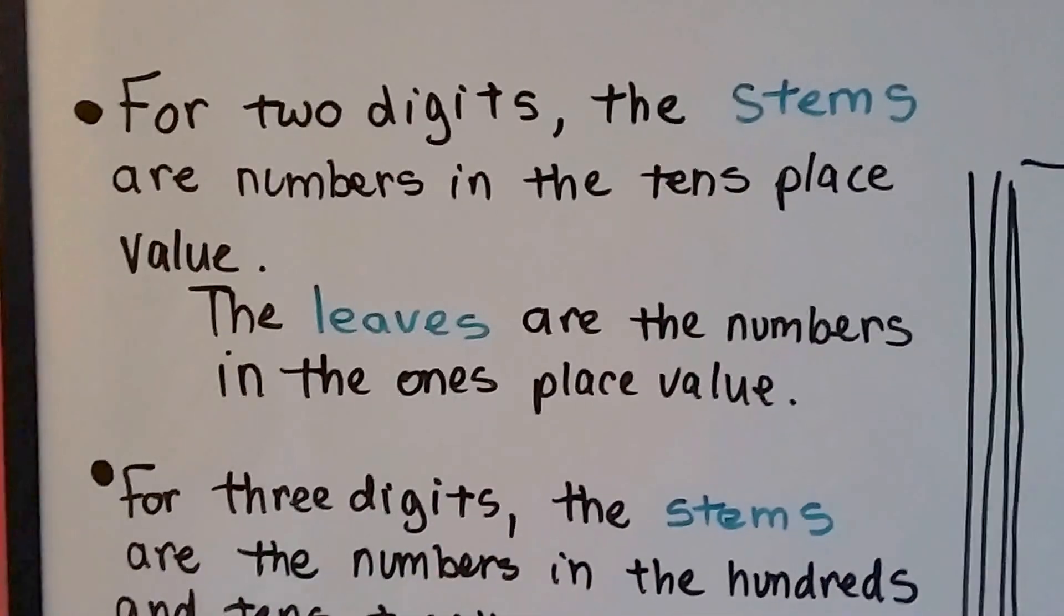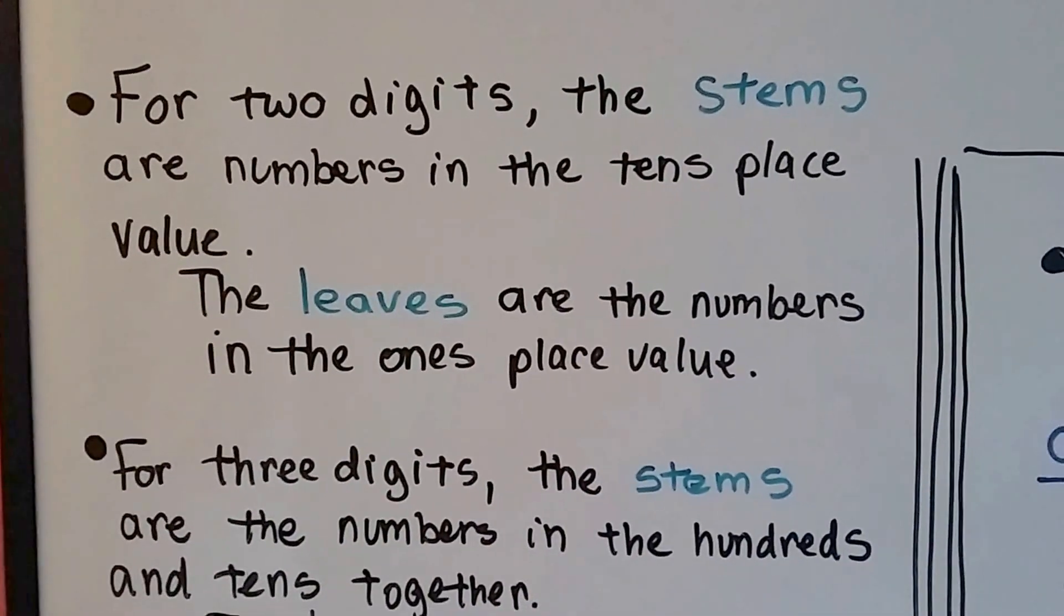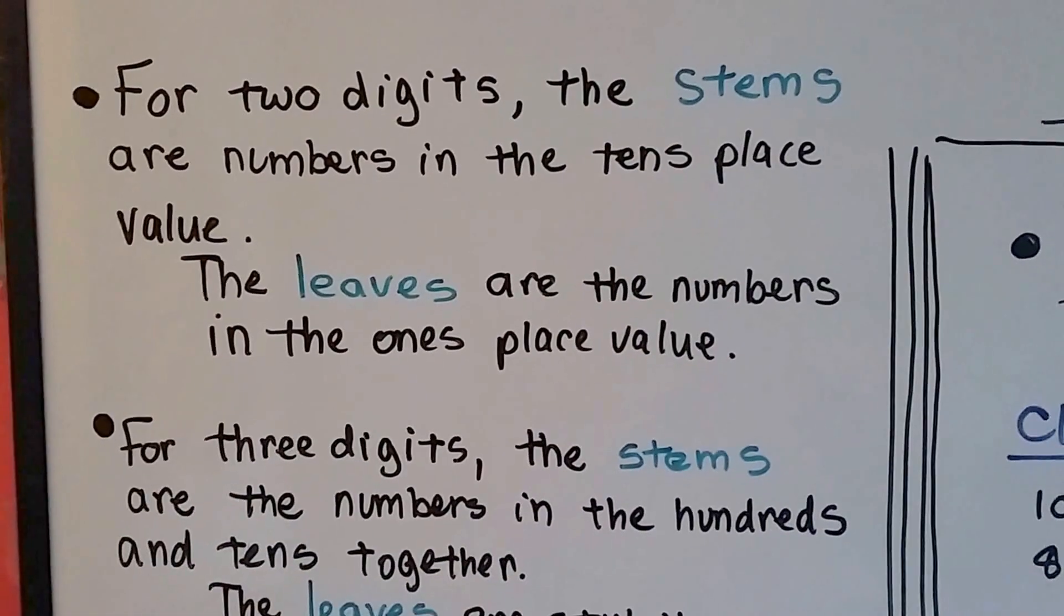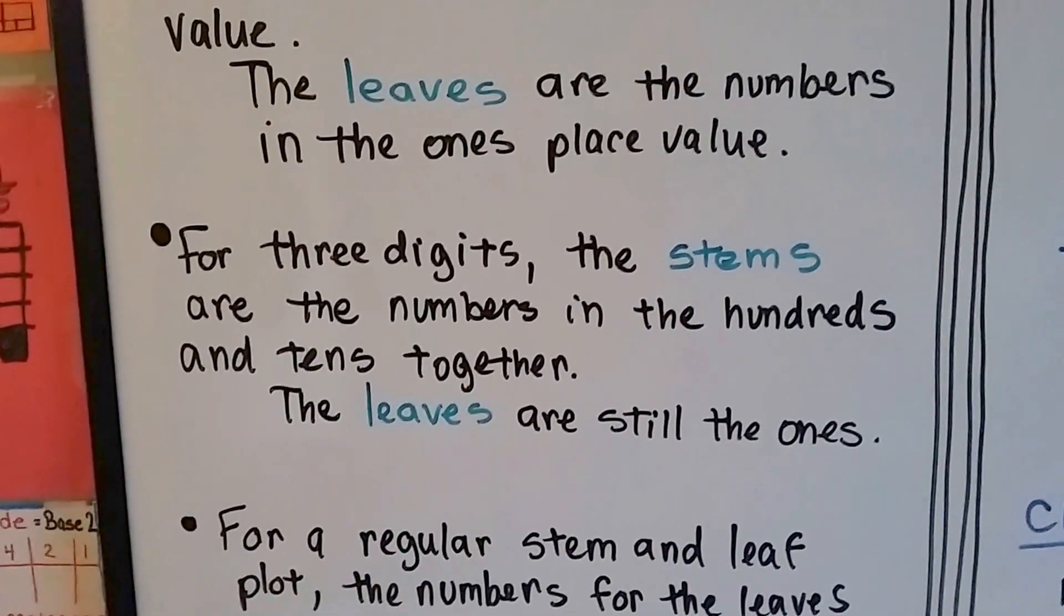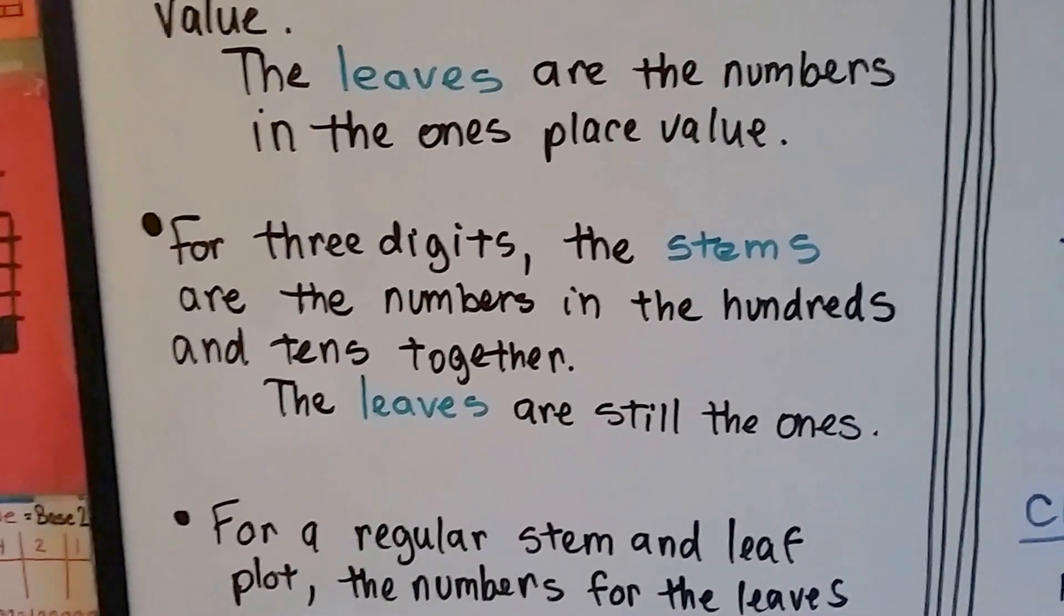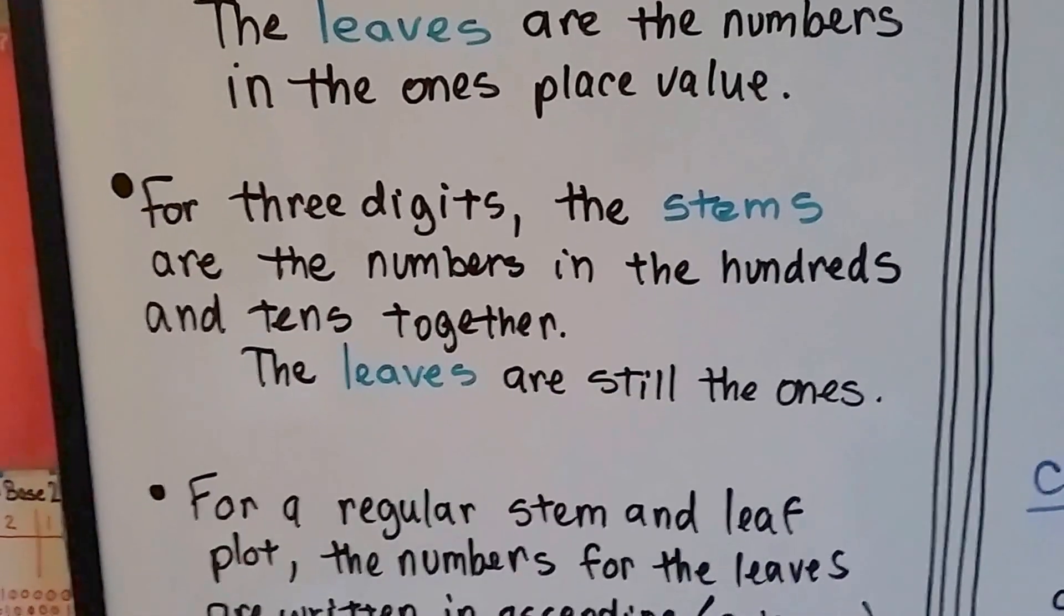For two digits, the stems are numbers in the tens place value and the leaves are numbers in the ones place value. If there's three digit values, the stems are numbers in the hundreds and tens together and the leaves are still the ones.